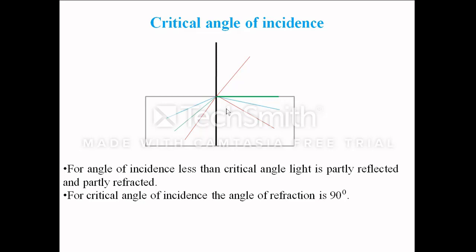Now consider the third case in which the light ray is represented by the blue line. We observe that after the light is incident at the interface, it is getting reflected in the medium itself — there is no refraction. Whenever the incident light is totally reflected in the medium, the phenomenon is known as total reflection. This occurs when the angle of incidence is greater than the critical angle. The critical angle is the angle of incidence at which the angle of refraction is 90 degrees.